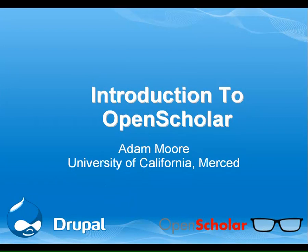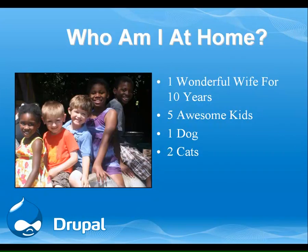I'm Adam Moore. I'm from the University of California Merced. Who am I at home? I have one wonderful wife for 10 years. I have five awesome kids and a dog and two cats.